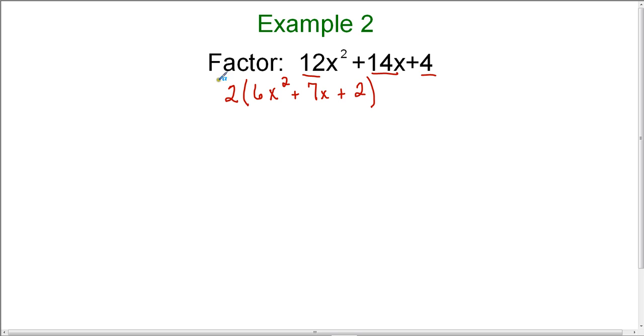I've factored out the 2, and I'm going to keep bringing it down because I can't lose it, but right now I don't need to worry about it. We're going to focus on this trinomial, 6x² + 7x + 2. This is the trinomial that we now need to factor.